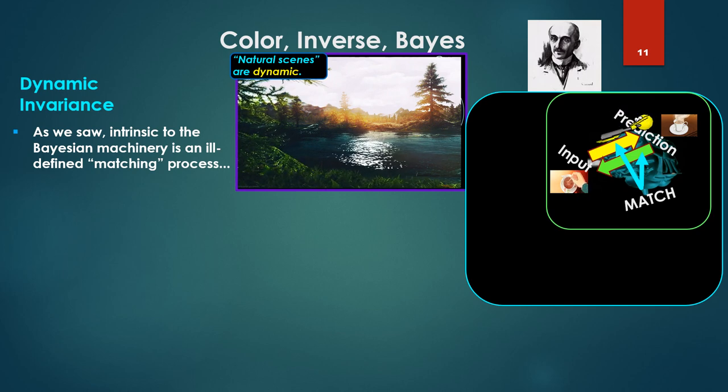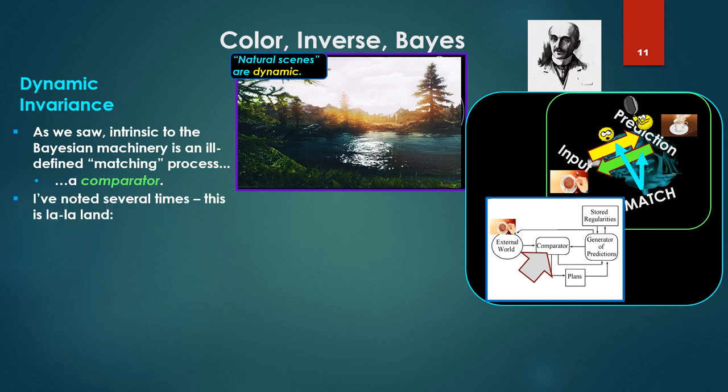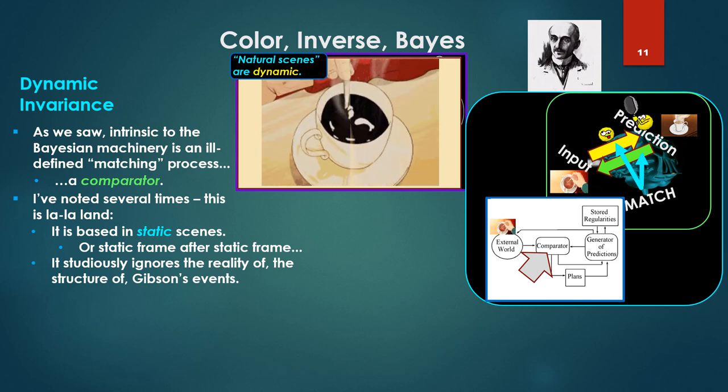In Bayes, a discrete state process cannot handle this. As we saw, intrinsic to the Bayesian machinery is an ill-defined matching process. We have the prediction, the downward flow compared against the input, the upward flow. And as we stated, the prediction actually wins if there's a match. The downward flow wins, suppresses the input. So this is a comparator at its base, a comparator of the external world. I've noted several times this is la-la land. It's based in static scenes, on static frame after static frame.